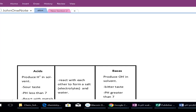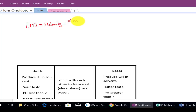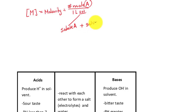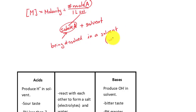In the previous lessons, we learned about concentration, and concentration is represented by the letter M. M is molarity, and we know that molarity is based on two units. Molarity is equal to the number of moles divided by one liter of solution. In a solution, it consists of two things: the chemical being dissolved, called the solute, and this solute interacts with a solvent. An example of a solvent is water.